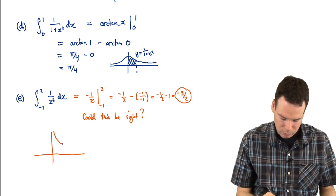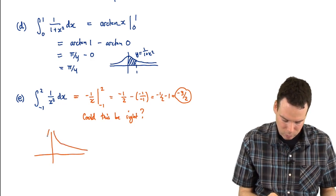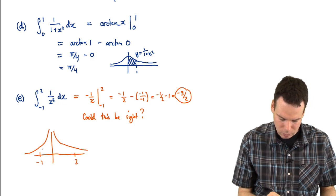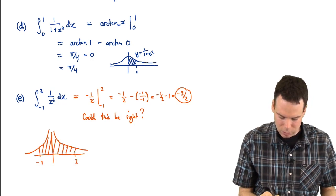Let's sketch the graph of this. 1 over x squared looks something like this. We're integrating from negative 1 out to 2, so the integral represents the area of this region.